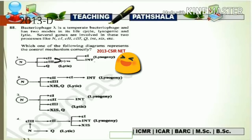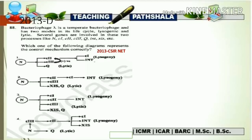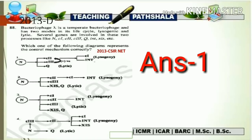We can eliminate the other three options. Option 2 incorrectly shows C1 activating INT gene — INT and C1 are both activated by C2, not sequentially. Option 3 incorrectly shows N activating C1, C2, C3, and XIS — C1 is activated by C2 and C2 by C3, not by N directly. Option 4 incorrectly shows XIS being activated by C2 — XIS is not activated by C2. Therefore the correct answer is option number one.